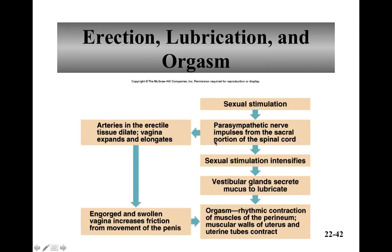This flowchart shows erection, lubrication, and orgasm for the woman. It starts with sexual stimulation and then parasympathetic activation — similar to males — from the sacral portion of the spinal cord. You get dilation of arteries, and the corpora cavernosa and vagina both become engorged and swollen. As sexual stimulation intensifies, vestibular glands secrete mucus to lubricate. Then you get orgasm, which involves peristaltic-like muscular contractions of the uterus and uterine tubes that help accept the sperm and deliver it.